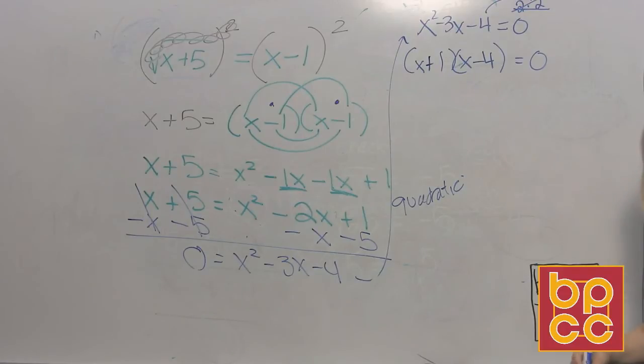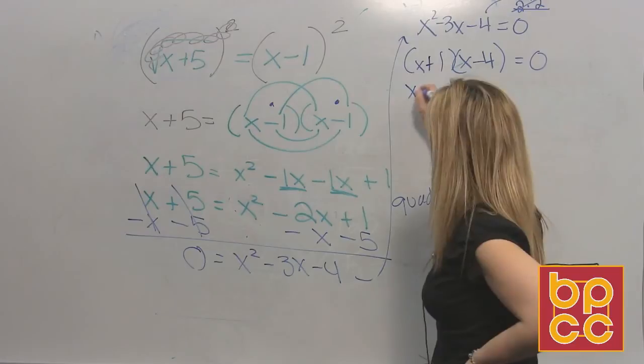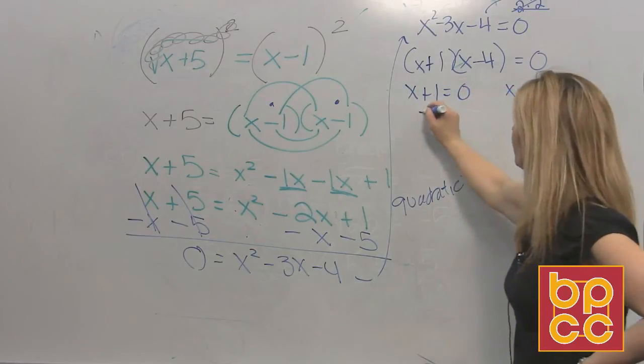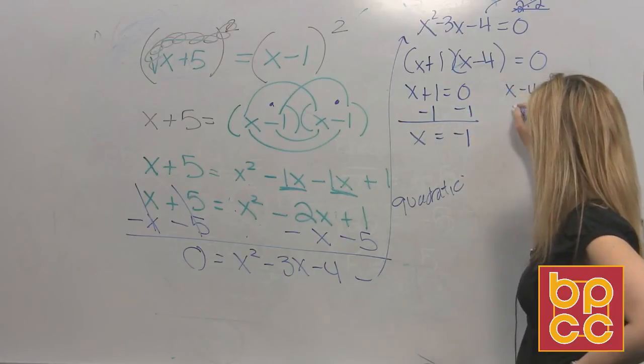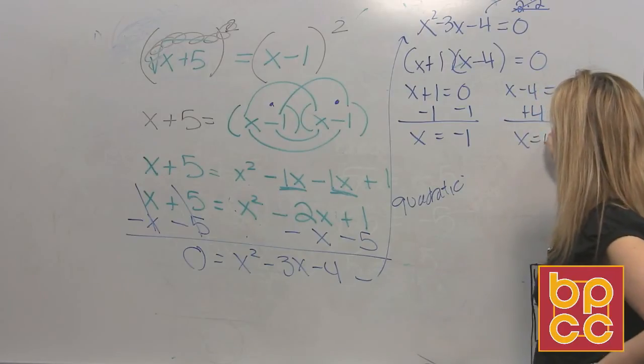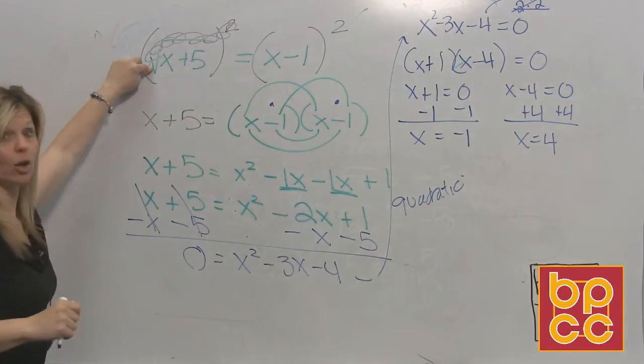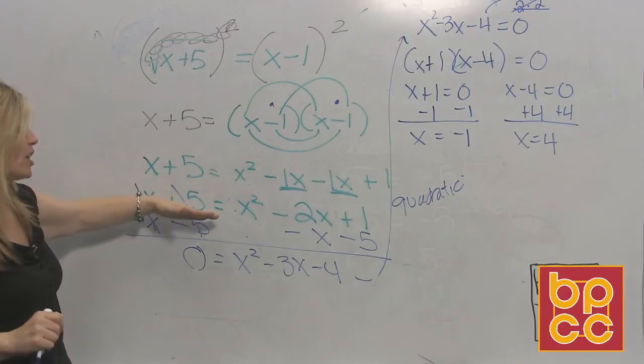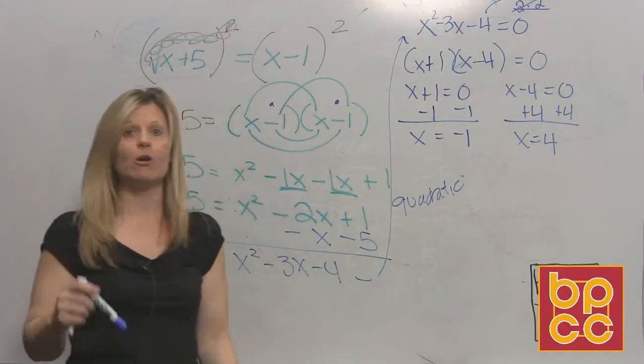Now we're not quadratic. We have two x's. They're linear. So we write our two linear equations. And we solve each. So we get one solution, negative one. And the other solution's four. So everybody look. We started with an equation that had a radical, a square root. We knocked it out and made the equation quadratic. And a quadratic should have two solutions. But here's the problem. The original wasn't quadratic. So there's no guarantee these both work.